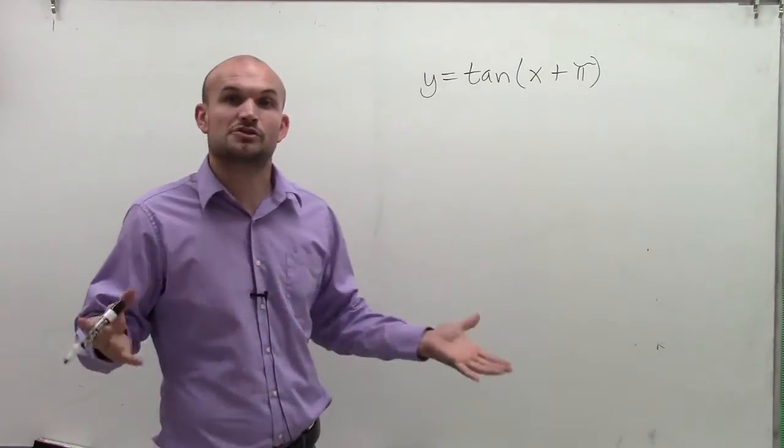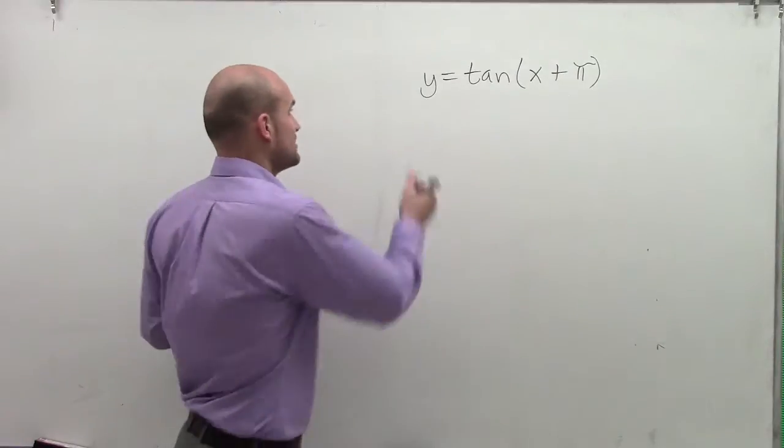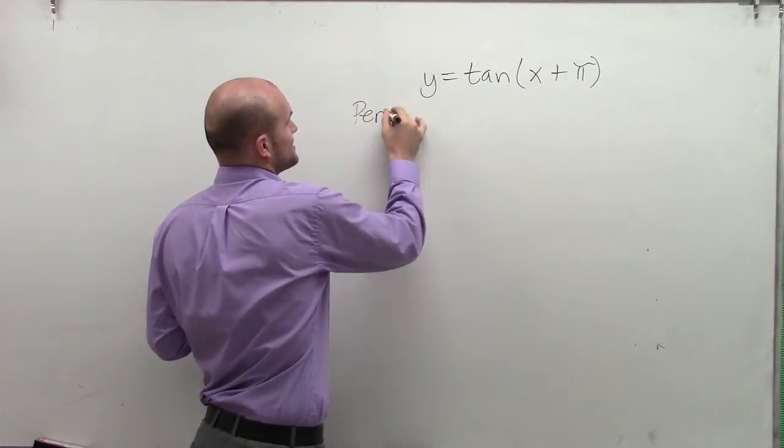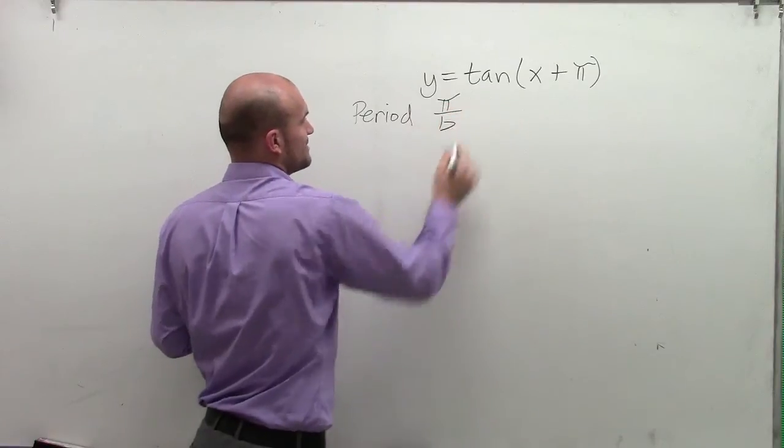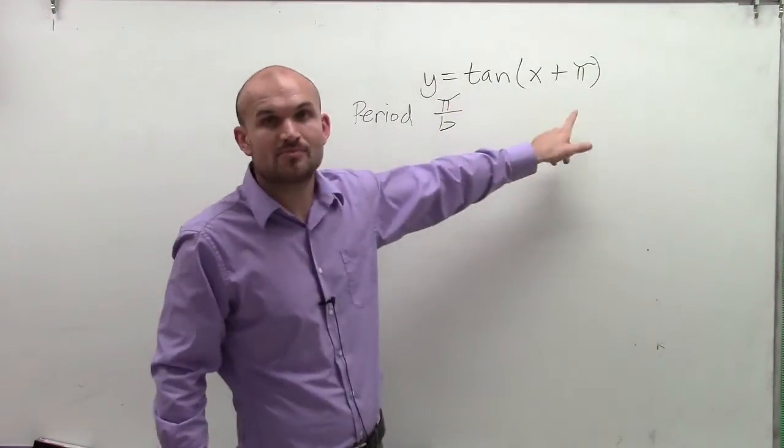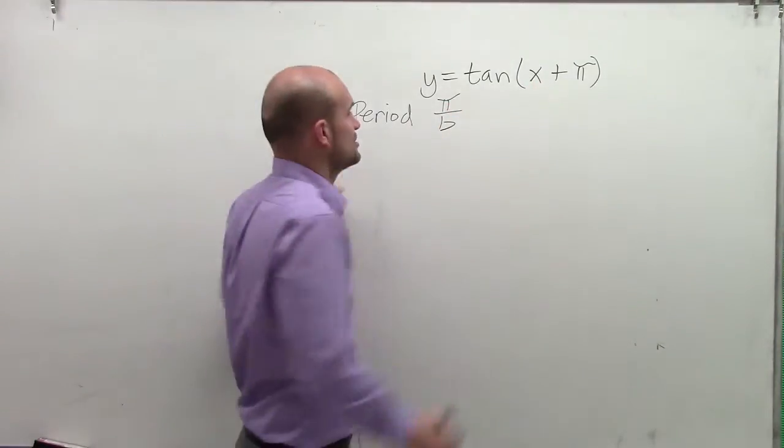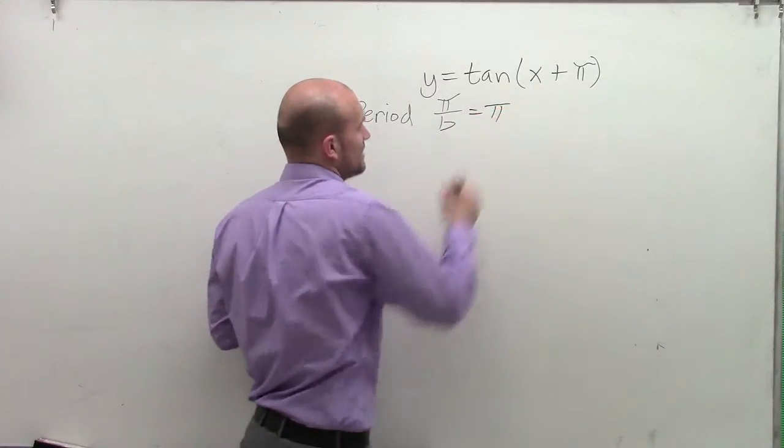So the first thing whenever we're graphing a trigonometric graph is we need to find the important points. The first thing we want to find is our period. Now our period for tangent is going to be pi divided by b, which in this case our b is the coefficient of x, which is 1. So my period is still going to remain pi.